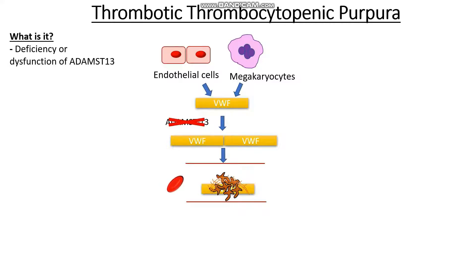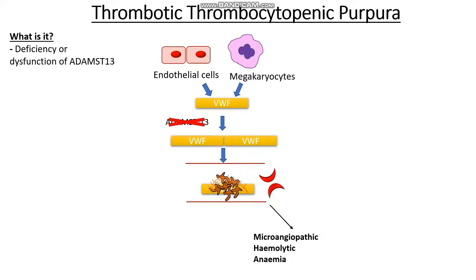So that means when red cells are passing past the fibrin sheath, they actually get cleaved in half and split in half. These sheaths and clots tend to get deposited in small blood vessels. And because the red cells are being broken down, we can see there's a degree of hemolysis going on. So therefore we can call thrombotic thrombocytopenic purpura as a type of microangiopathic hemolytic anemia.